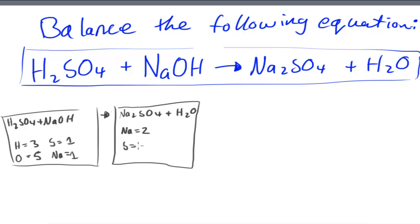SO4, we've got sulfur is equal to one, oxygen is equal to four plus one which is five. And we've got hydrogens, we've got two hydrogens, so hydrogens are equal to two.